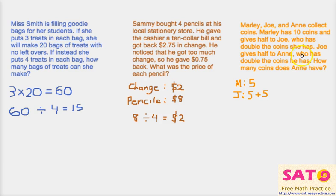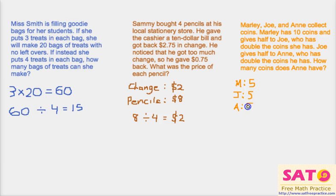Now Joe gives half to Anne. If Joe gives half of his 10 coins to Anne, he would have 5 left. Anne gets half of Joe's coins, and then has double the coins Joe has. So Anne starts with 5 and has double, which means 5 times 2 equals 10. So Anne has 10 coins.